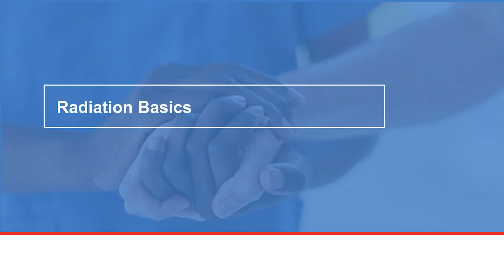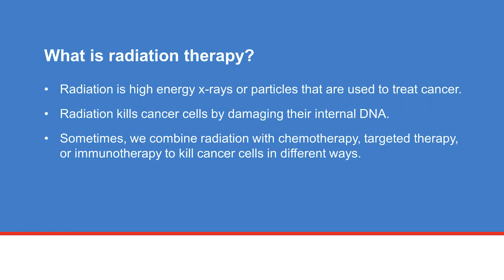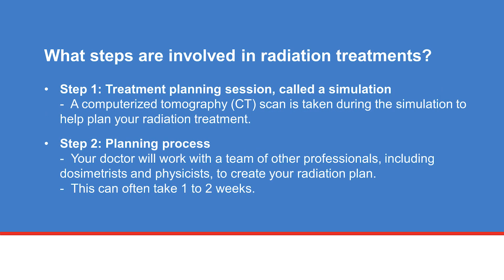We will first discuss what radiation therapy is, including how it is planned and delivered. Radiation therapy is the use of high-energy x-rays to treat cancer. Radiation kills cancer cells by damaging their DNA. In certain cases, radiation can be combined with chemotherapy and other types of cancer treatments. You will first have a treatment planning session, called a simulation.